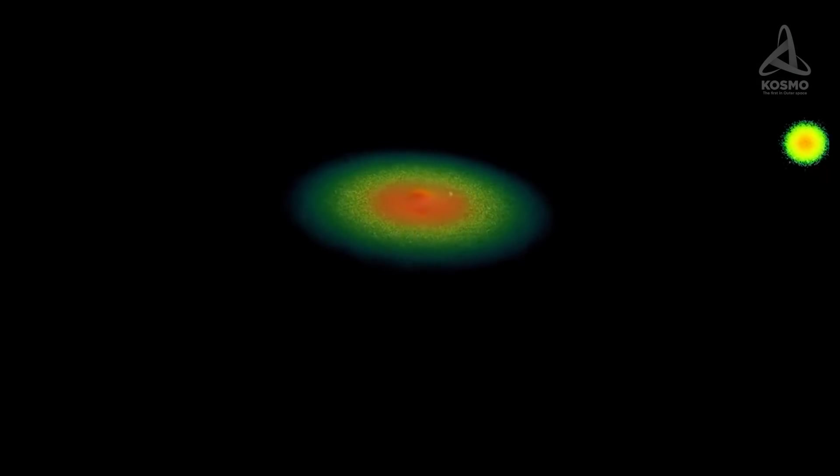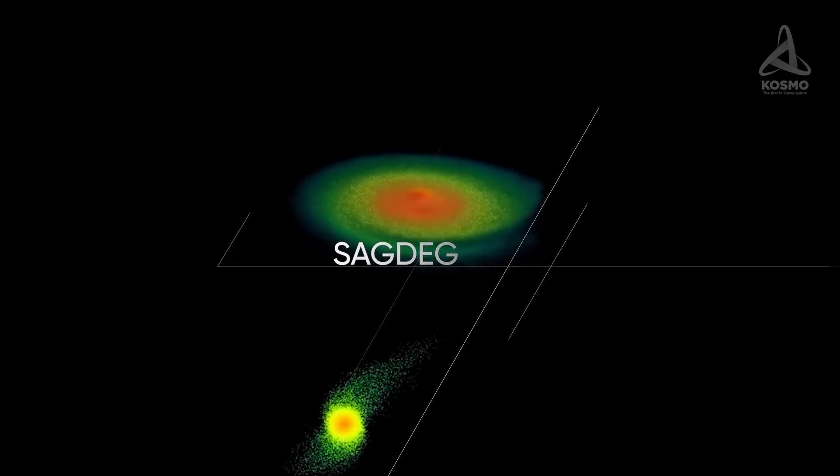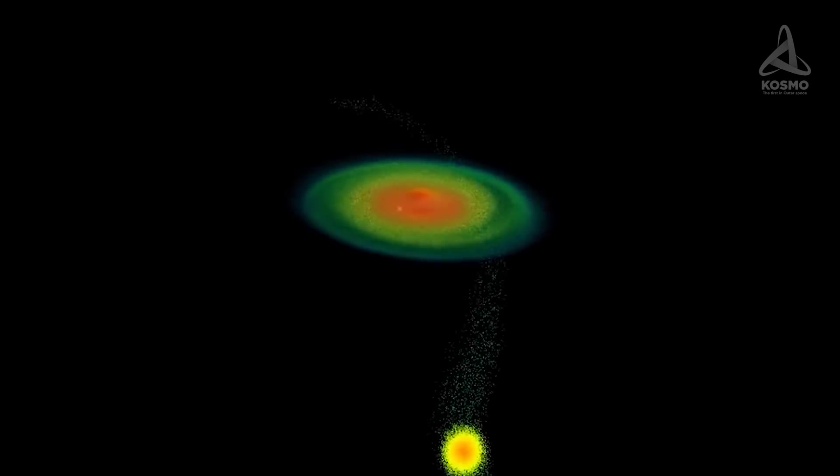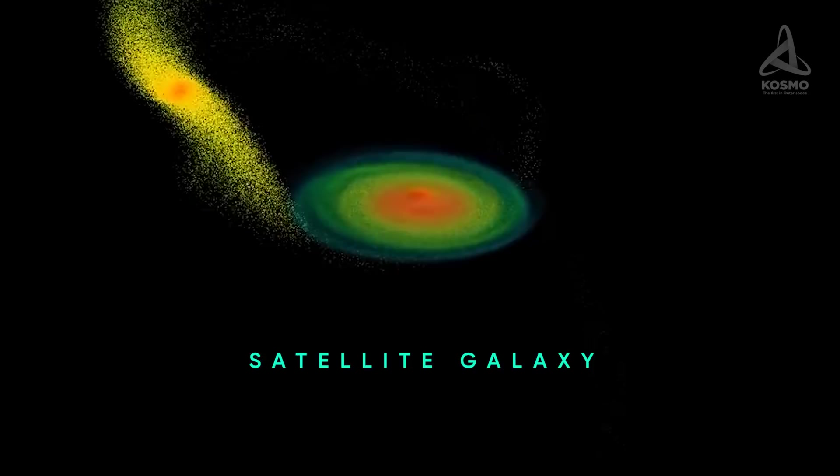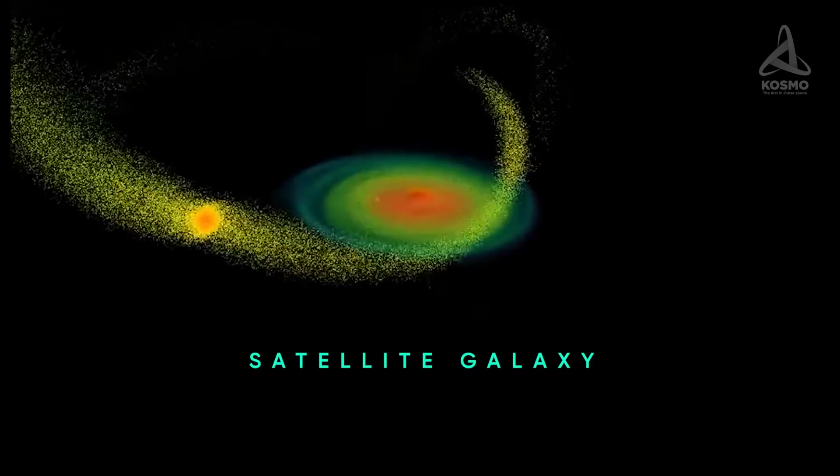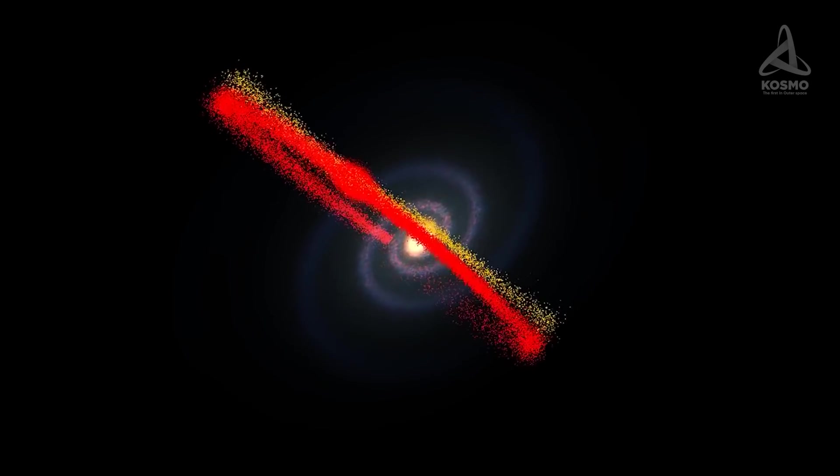Our second closest neighbor is the Sagittarius Dwarf elliptical galaxy, which used to be considered the first one as well. It is a satellite galaxy with a clearly defined elliptical structure with its orbit passing over the Milky Way. The object contains four globular stellar clusters,